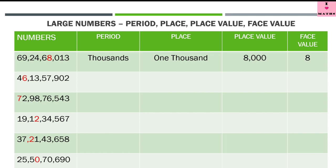Now let us look at this number. Let's read it: 46 crore 13 lakh 57 thousand 902. In this we have to find out the period of 6. We read it as 46 crore, so 6 is in the crore's period. The place is 1 crore, and since 6 is lying at 1 crore's place, the place value is 6 crore. The face value, as I told you, is the digit itself — so face value is 6.